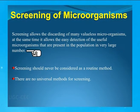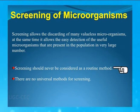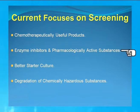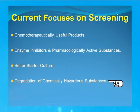Screening discards many valueless microbes and at the same time selects the microbes of interest from a very large population. One should always keep in mind that screening should never be considered as a routine method, and there are no universal methods for screening of microbes — it will depend upon the type of microbes one is interested in. Screening is done to obtain chemotherapeutically useful products such as antibiotics, enzyme inhibitors, and pharmacologically active substances, or for having a better starter culture for food industry, or for degradation of chemically hazardous substances which ultimately leads to environmental cleaning.